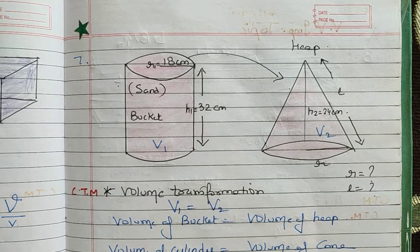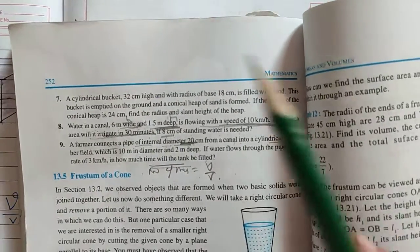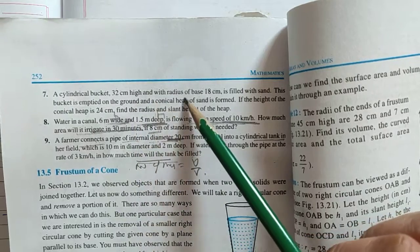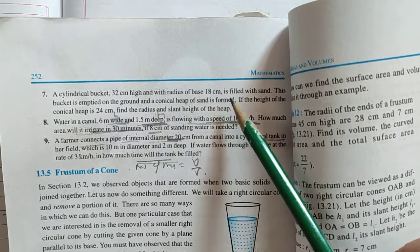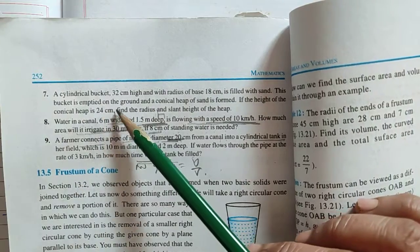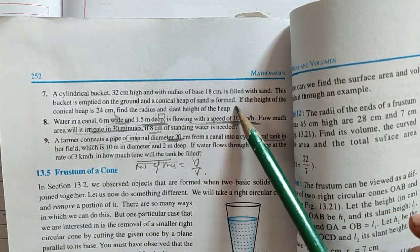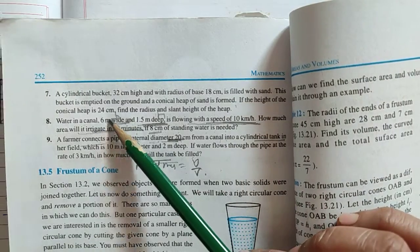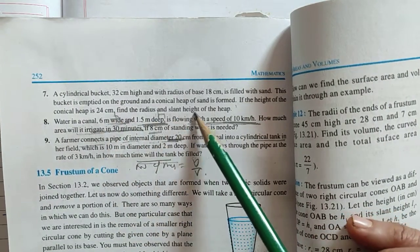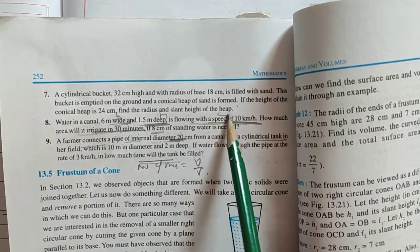Now move to the next question. A cylindrical bucket 32 cm high with base radius 18 cm is filled with sand. This bucket is emptied on the ground and a conical heap of sand is formed. If the height of the conical heap is 24 cm, find the radius and the slant height of the heap.